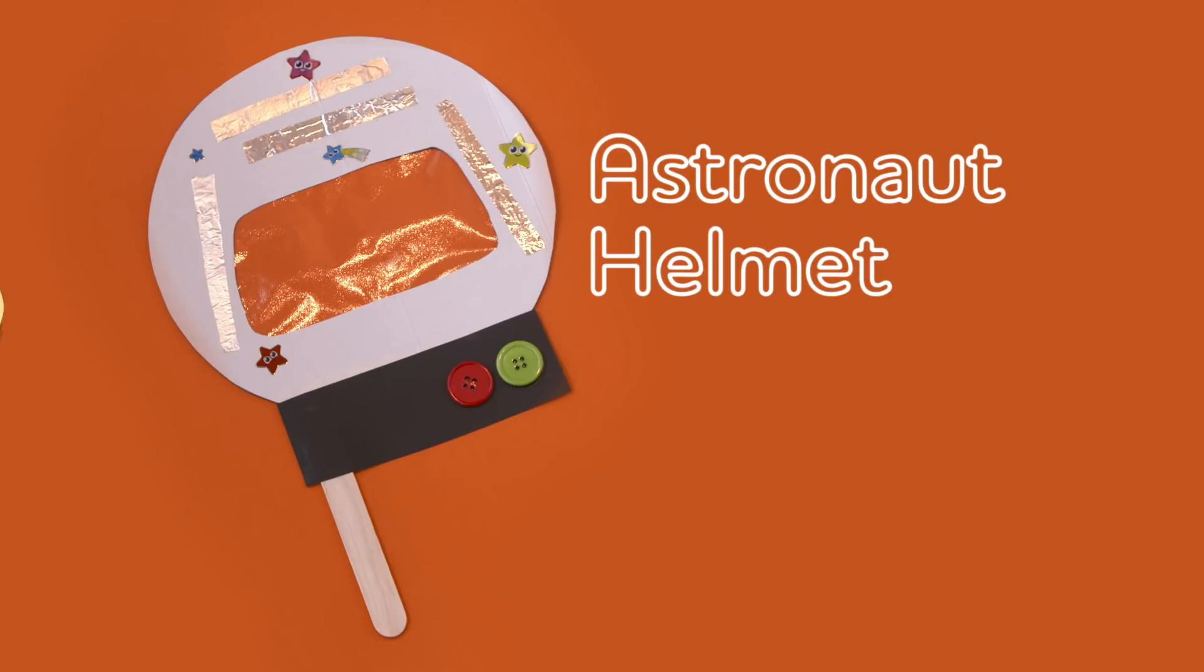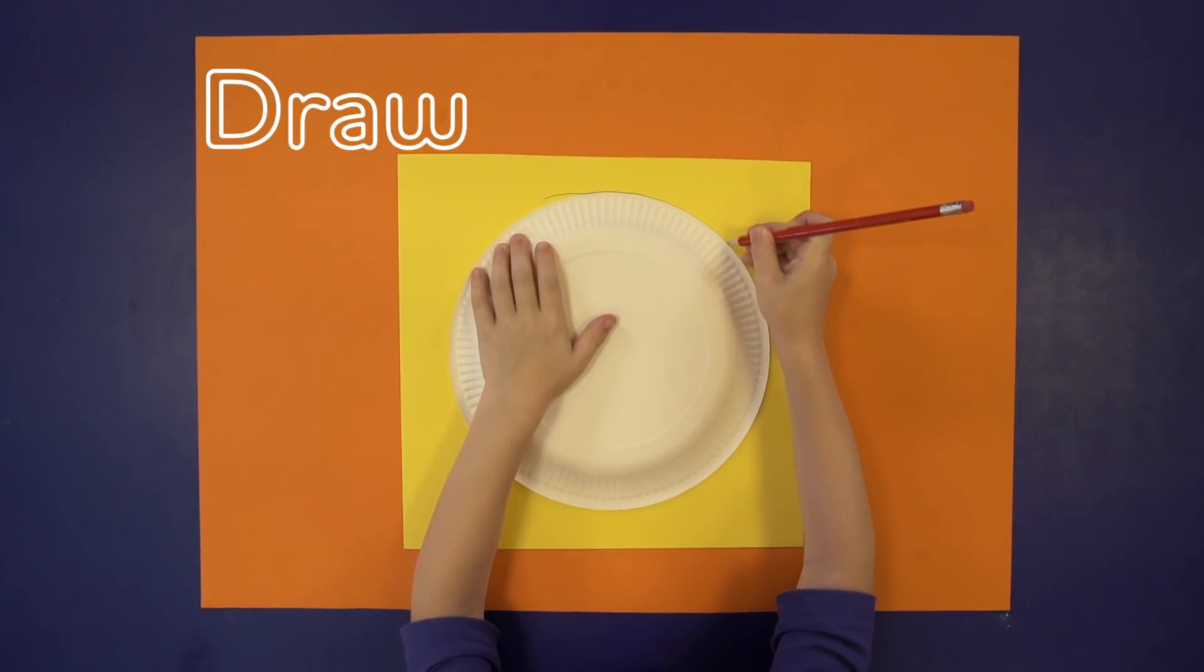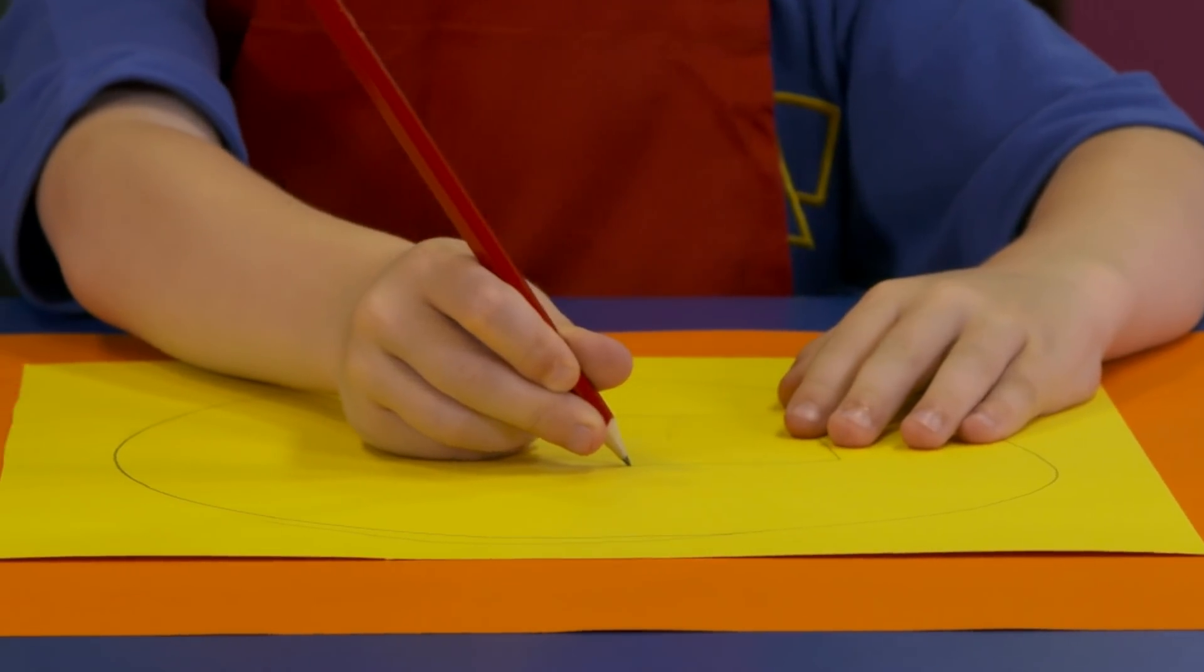Astronaut helmet! Draw around a plate to make the astronaut helmet shape. Then draw a rectangle for the visor.